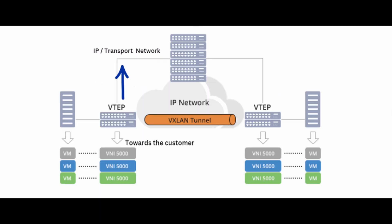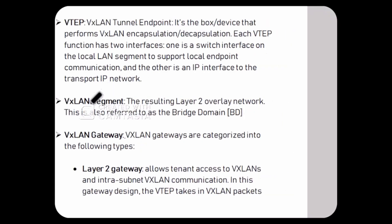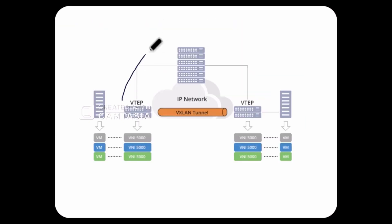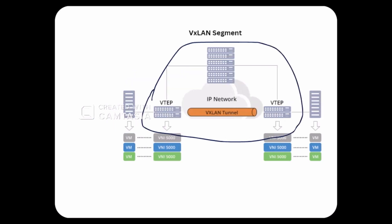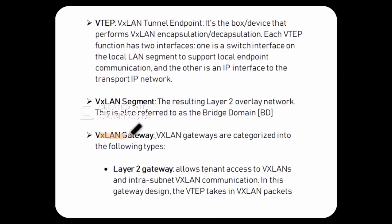Jise hum transport network bhi kehte hain. Next term is VXLAN Segment - yeh woh layer 2 overlay segment hai jo create hota hai after we establish the VXLAN tunnel. VXLAN tunnel establish hone ke baad jo resulting layer 2 overlay network banta hai, use hum VXLAN Segment kehte hain.